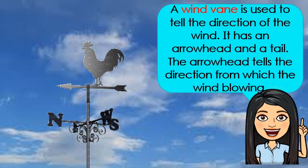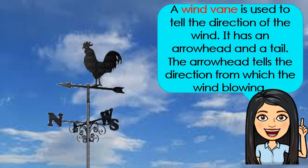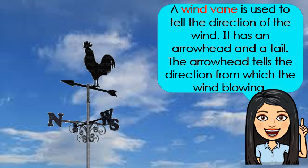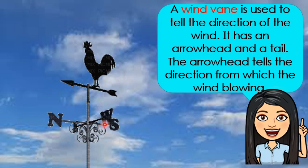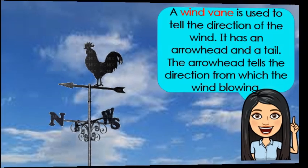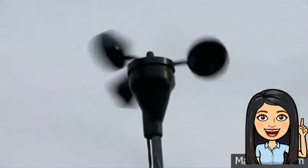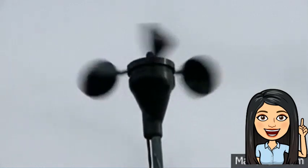This is an example of a wind vane. It is used to tell the direction of the wind. It has an arrowhead and a tail — the arrowhead tells the direction the wind is blowing. Wind blowing from the west is called a west wind; wind blowing from the north is called a north wind.